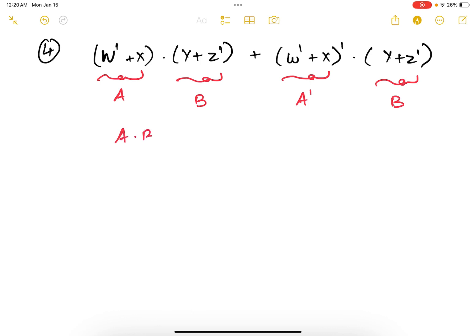it, it's going to be A·B plus A'·B, which is B times (A plus A'), which is B. Now just substitute the value of B, so that's y plus z prime.